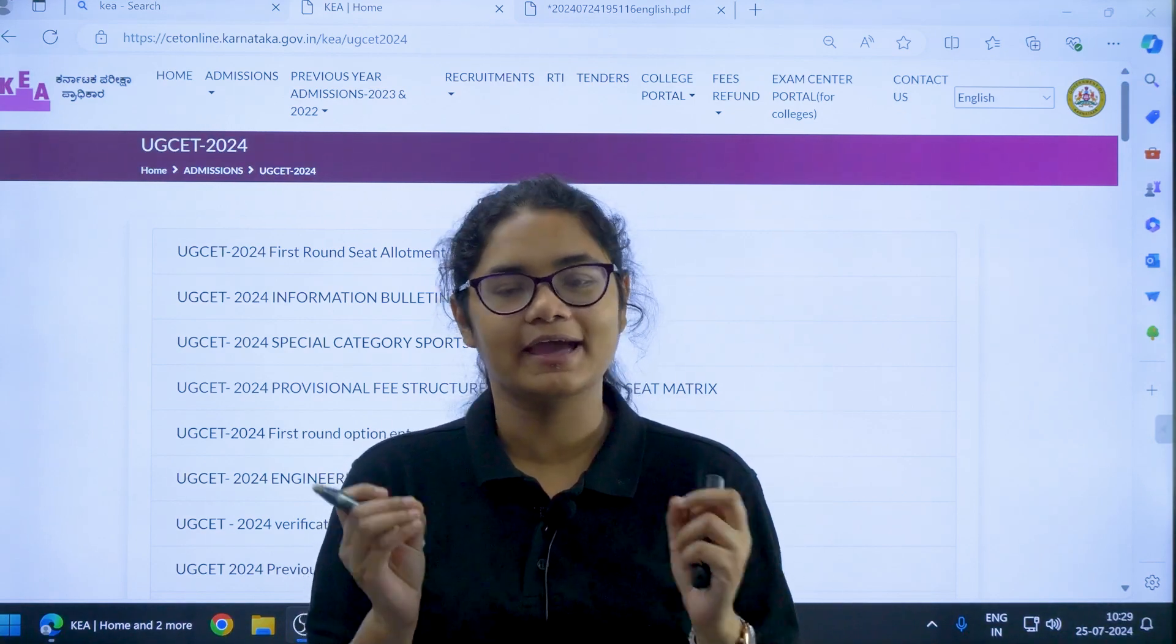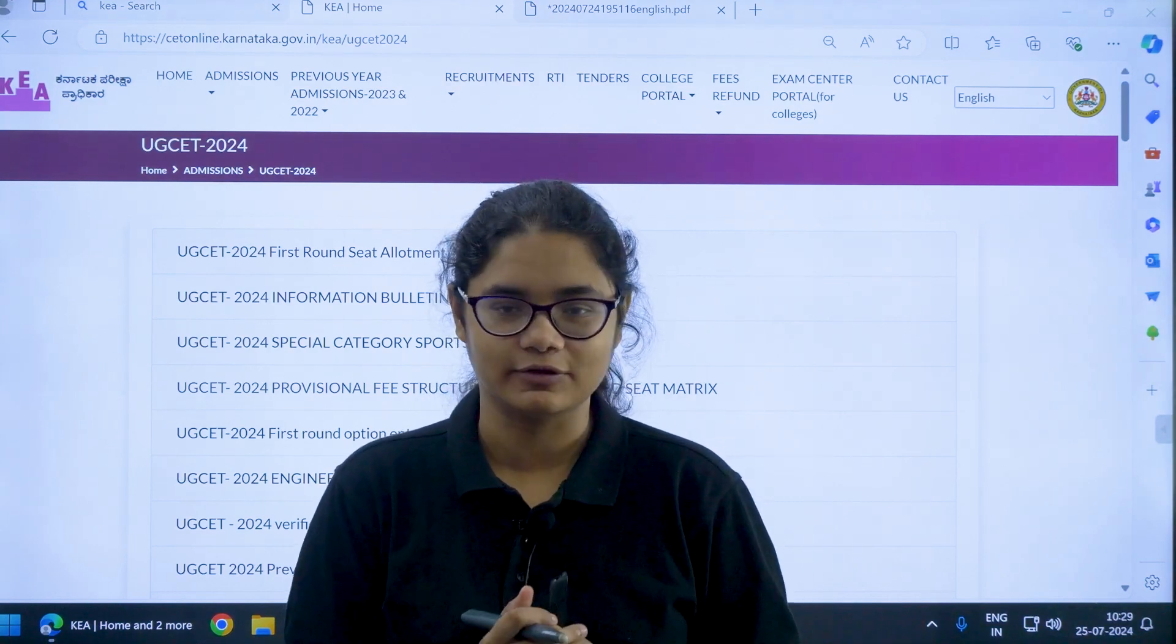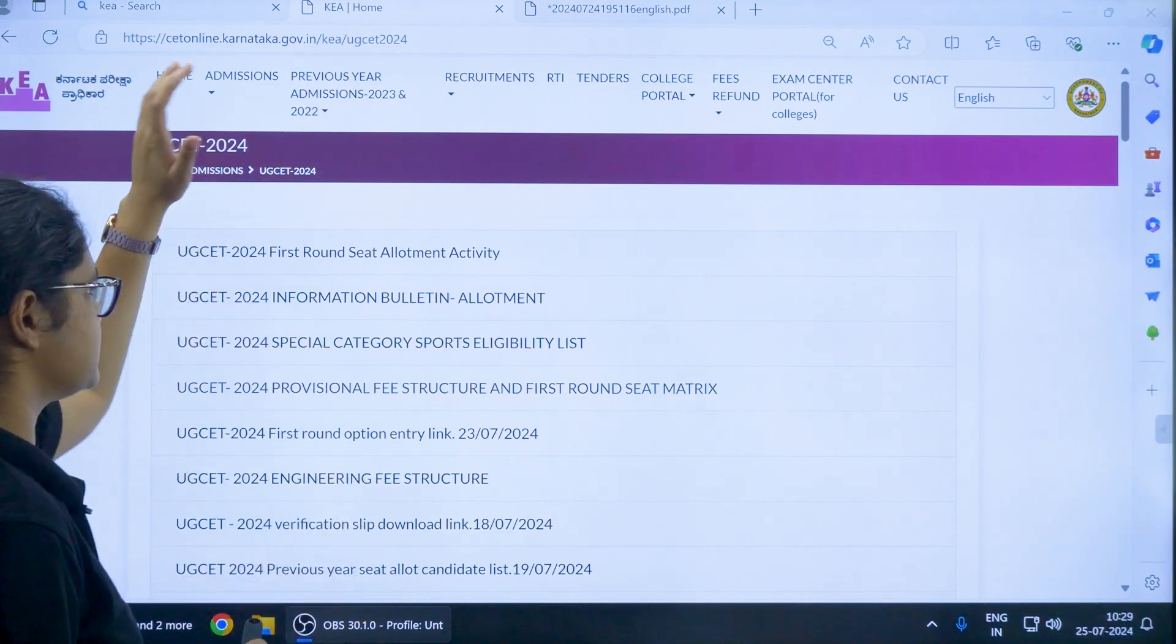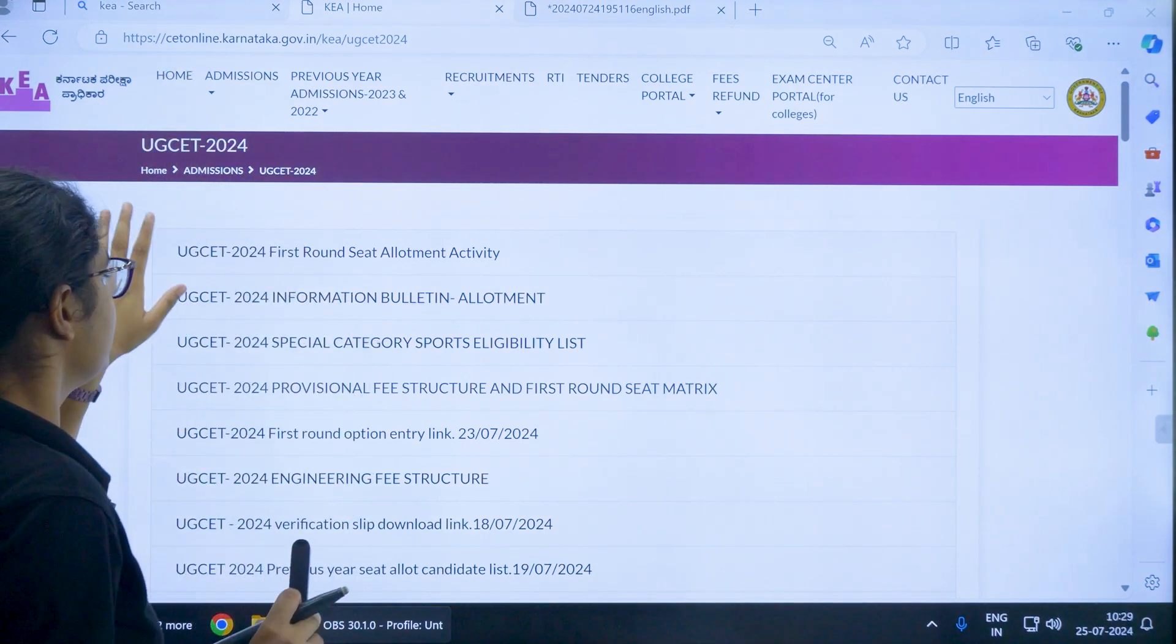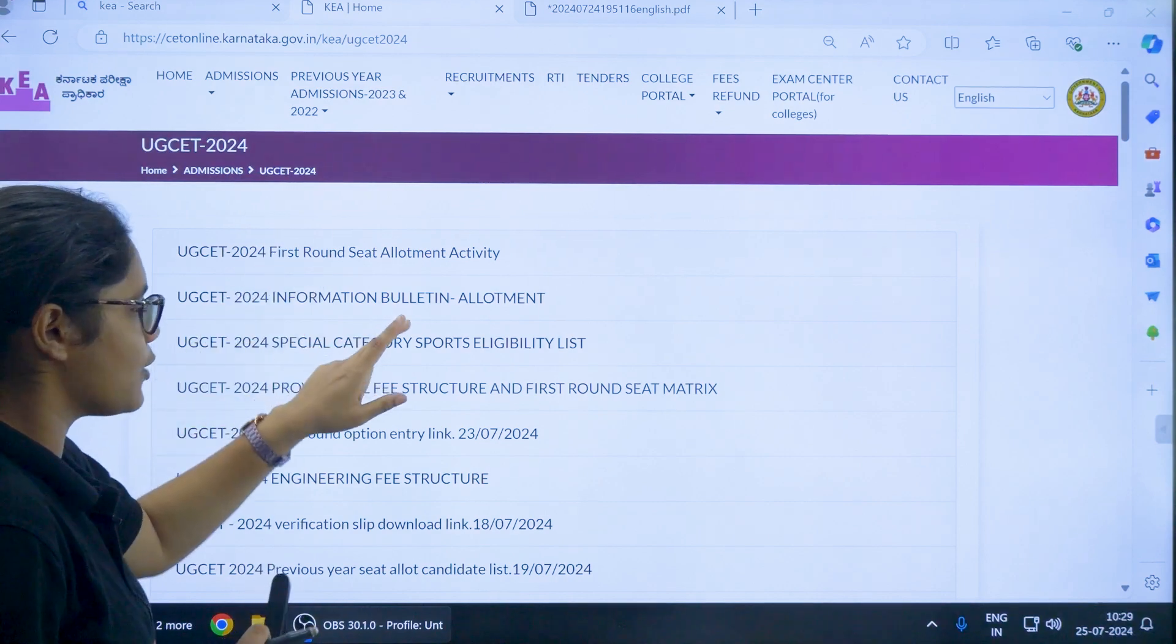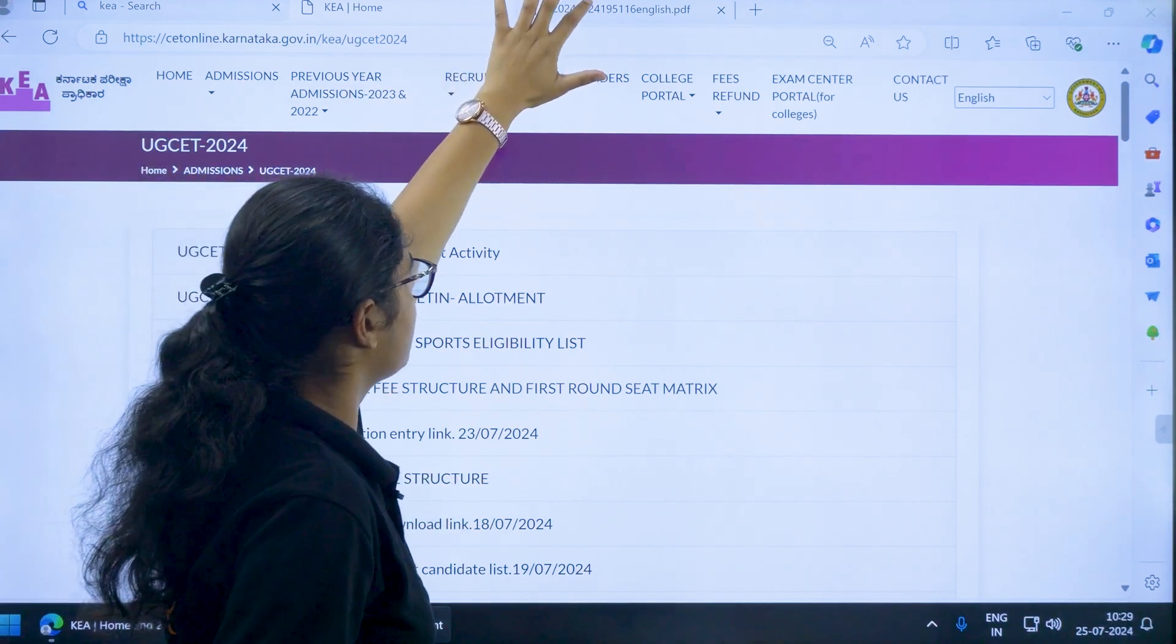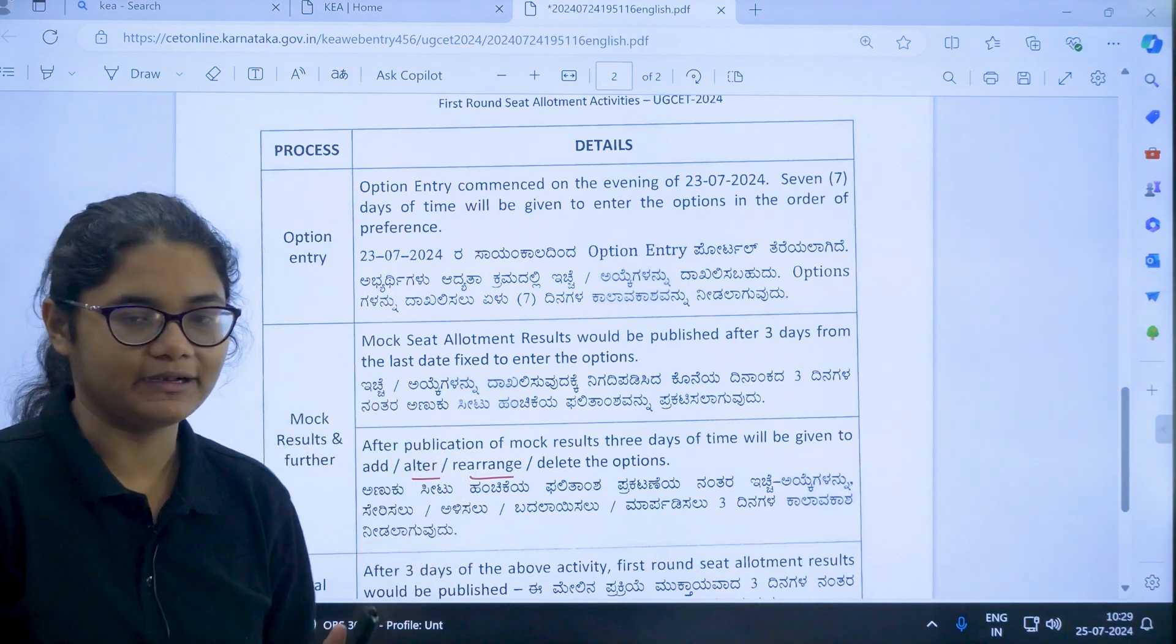Finally, the KEA has updated the round one seat allotment activities and the dates for them. So let us quickly see them. You can go to the official website of KEA under the admission sections, UGCET 2024 section, you can find this link UGCET 2024 first round seat allotment activity. Once you click on this link you will be directed to this PDF where you can see all the activities and their probable dates.